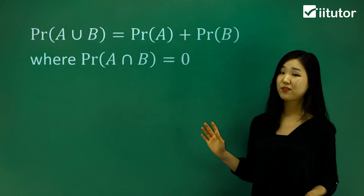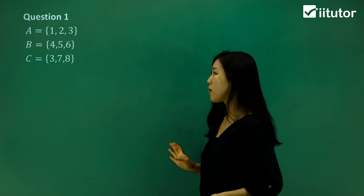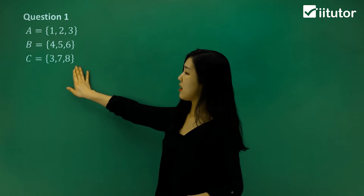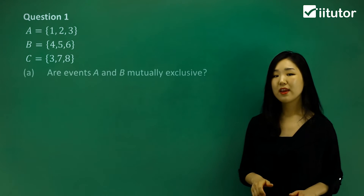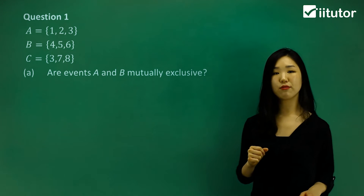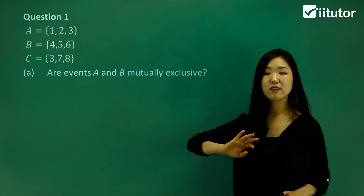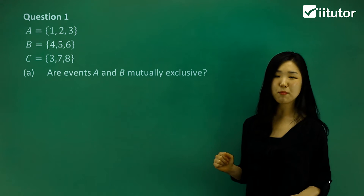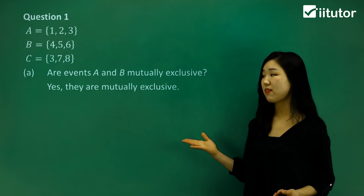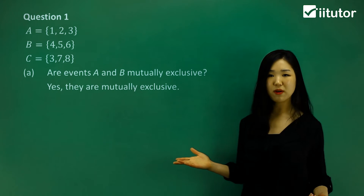So the probability of A or B is simply the sum of these two events. In question one, they give us events A, B, and C, each consisting of three numbers. In part A, they ask are events A and B mutually exclusive? A consists of one, two, three and B consists of four, five, six. Are there any common numbers? No — so yes, they are mutually exclusive because they don't hold any common numbers or common parts.